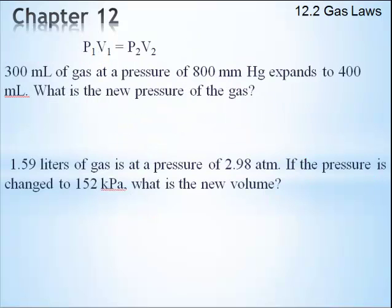So let's try a couple of these problems. Here's a problem. I've got 300 mL of gas at a pressure of 800 millimeters of mercury, and it expands to 400 mL. What's the new pressure of the gas?